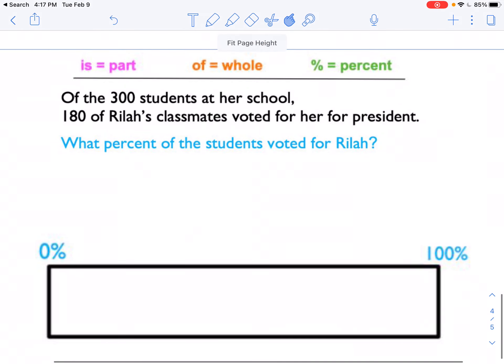Of the 300 students at her school, 180 of Rilah's classmates voted for her for president. There was an important word that I didn't say there. Of the 300 students at her school, 180 of Rilah's classmates voted for her for president. The word that I didn't say is that green word, percent. If I didn't say percent, that means we're probably solving for it. If I look in the purple words, there it is. What percent of the students voted for Rilah? So that means that in this problem, we're going to solve for percent. So our answer is going to be somewhere between 0 and 100.